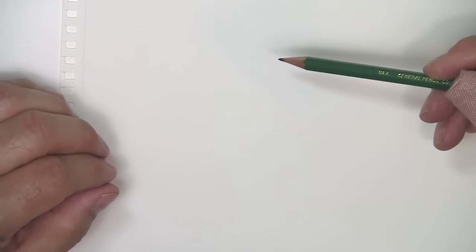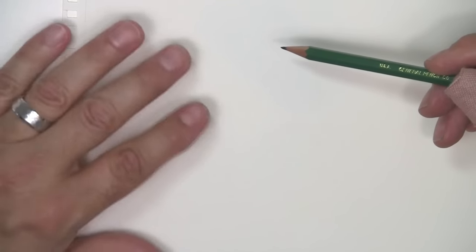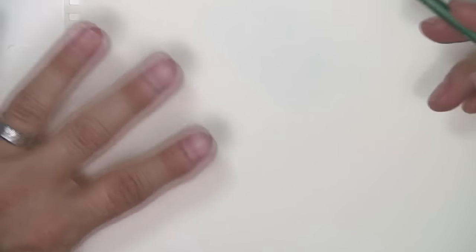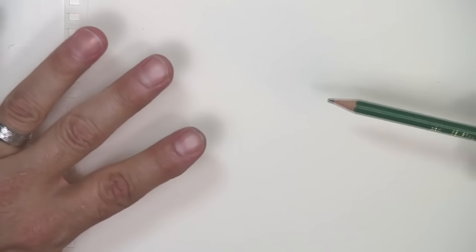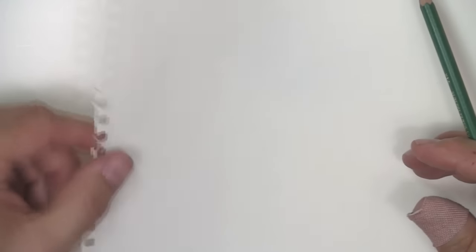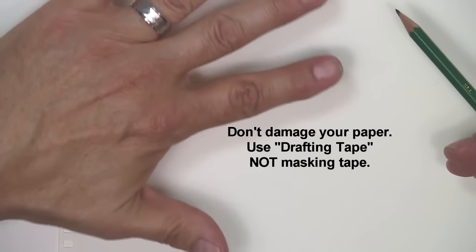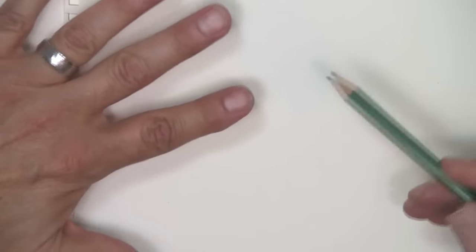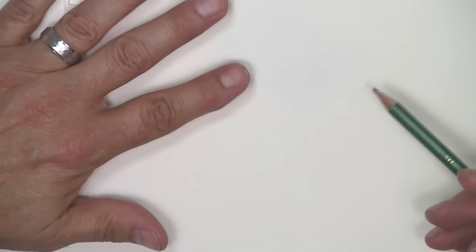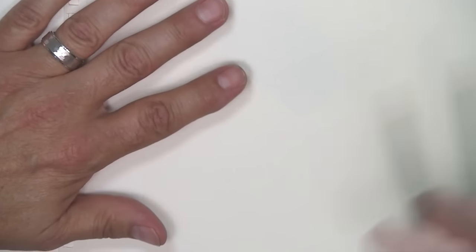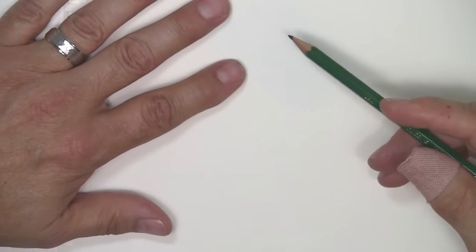Before I get started on explaining what papers I like to use and why, I want to show you why it's very important to keep your hands off of your paper in any place where you think you're going to be doing your drawing. Always pick up your paper by the edges to move it around or to hold it. I usually tape down my paper so I'm not tempted to hold it with my hand. They'll use their other hand to hold down the paper and end up putting their fingers in places where later they want to do some shading and it ends up being a bit of a mess.